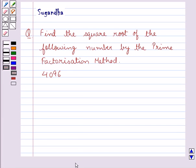Hello and welcome to the session. Today I will help you with the following question. The question says, find the square root of the following number by the prime factorization method. And the number given to us is 4096.